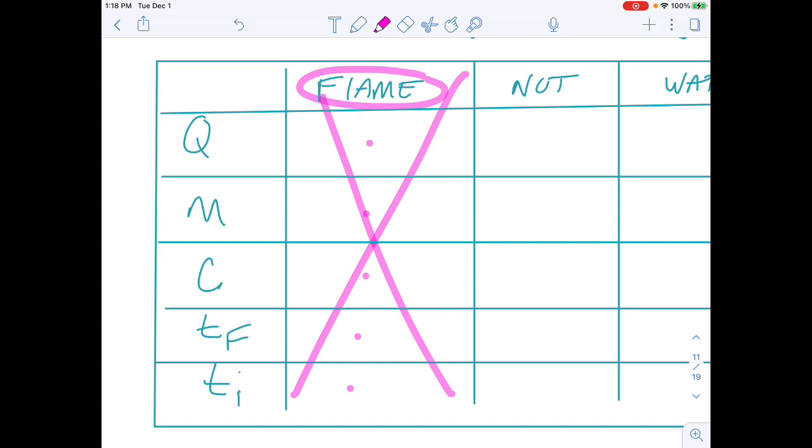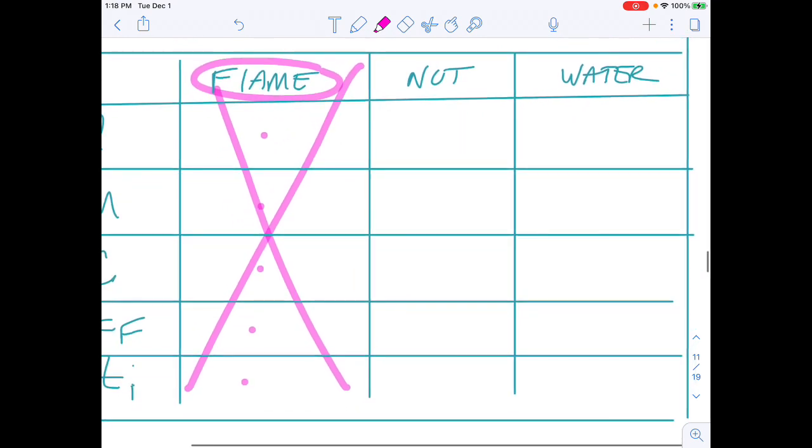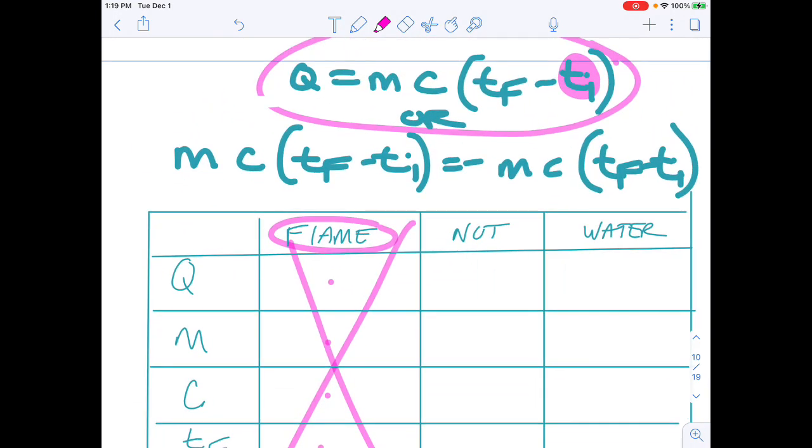The other two main players in this experiment were the nut and the water, that metal and the water. Well, if we were heating up that metal, then we can assume that the initial temperature of that metal was the same as the initial temperature of the flame.